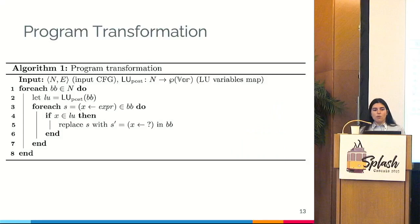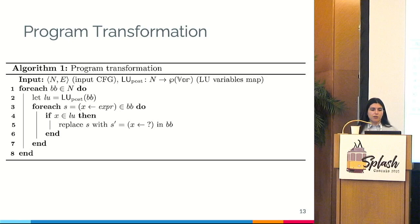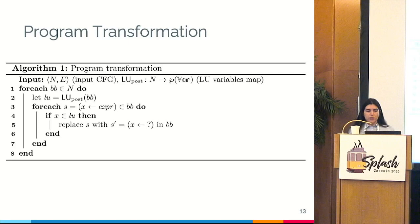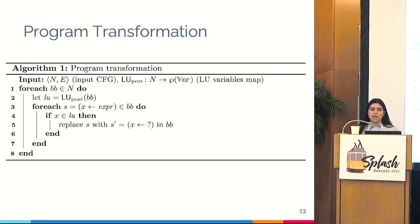For the program transformation step, this algorithm rewrites the initial intermediate representation into a new one for analysis. We work on the input CFG; since this executes after the data flow analysis, we already know which variables are likely unconstrained. For each basic block, we retrieve the likely unconstrained variables after execution of that block. For each assignment statement, if the left-hand side is likely unconstrained after that block, we replace the assignment with a non-deterministic assignment, thereby simplifying it.